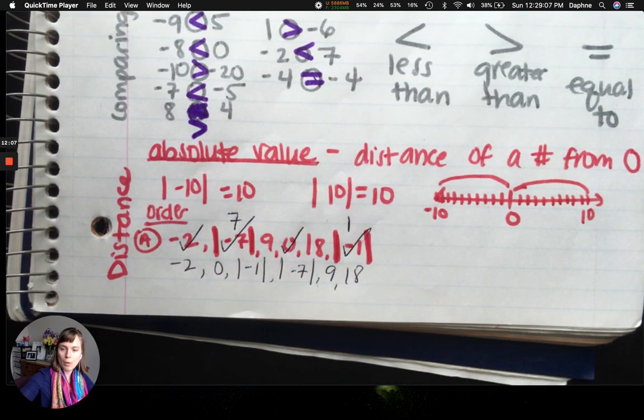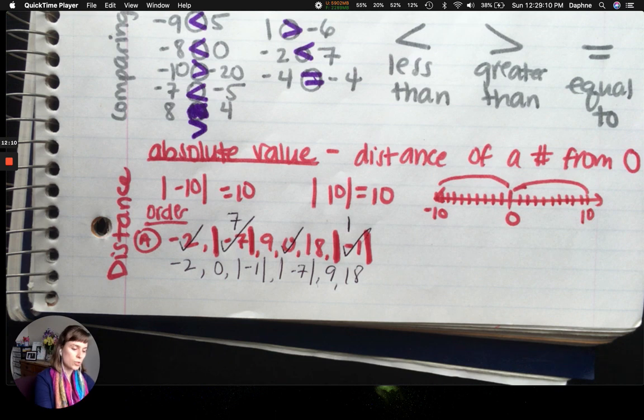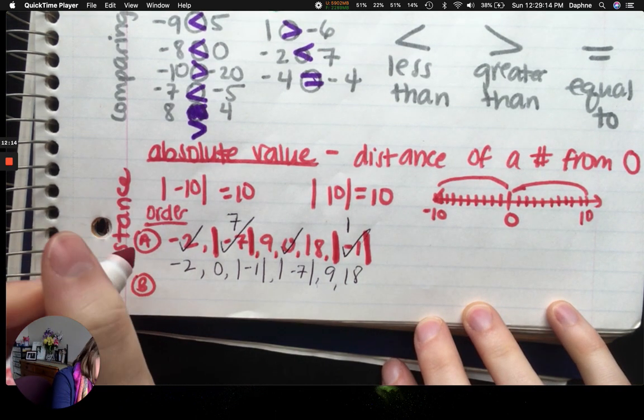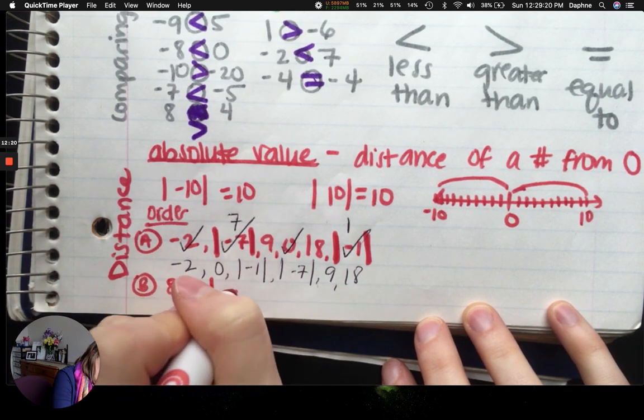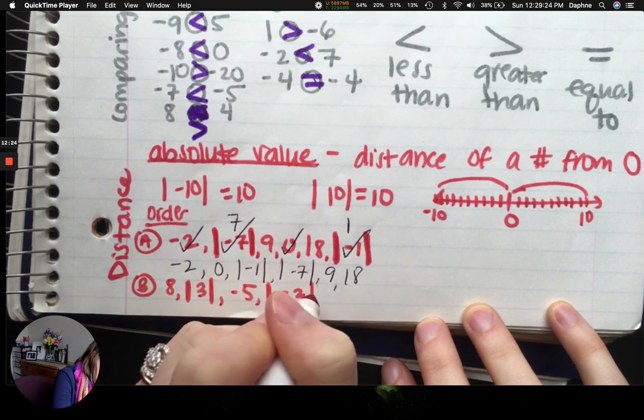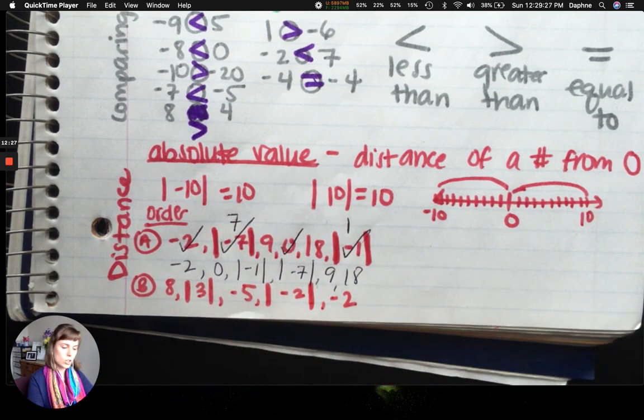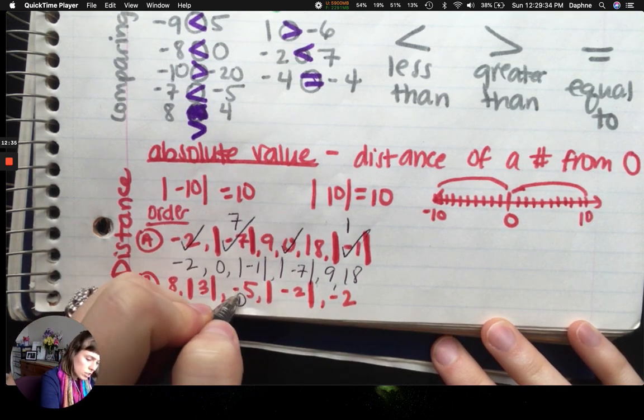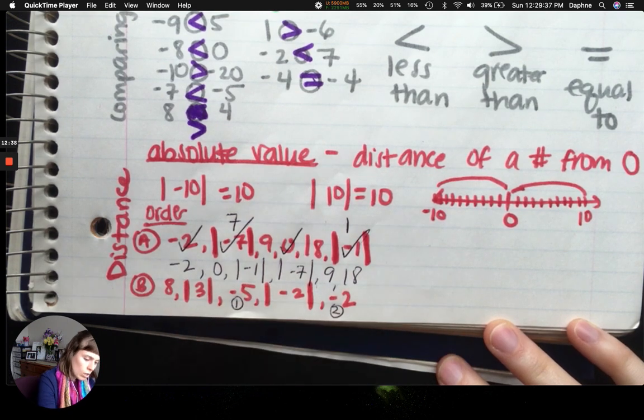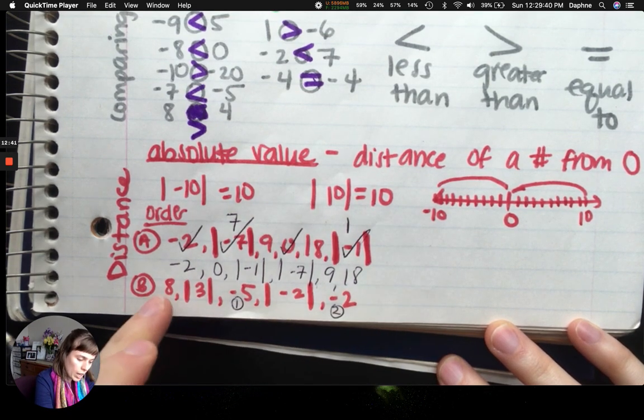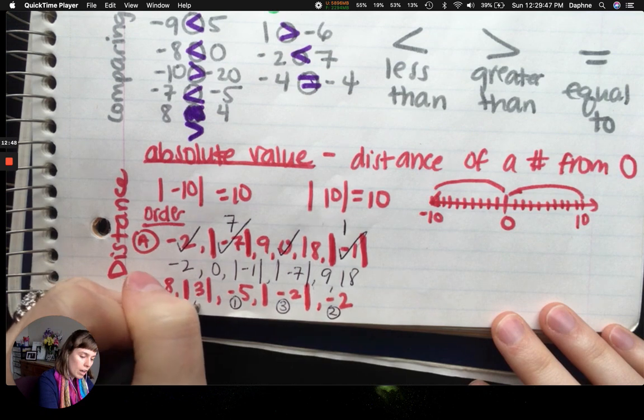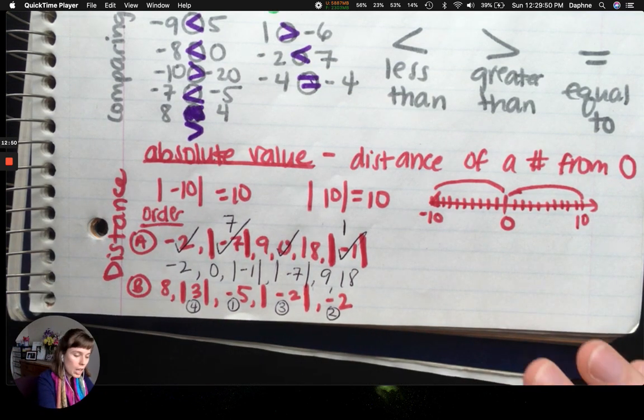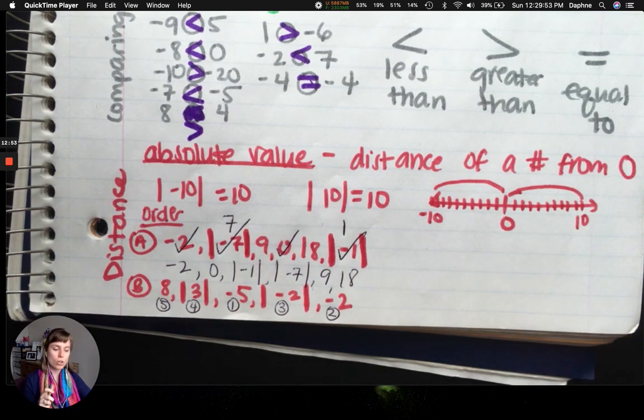I'm going to give you another example, but I want you to pause and do it on your own. Then I'll just write the answer. So for yours, I want you to order eight, the absolute value of three, negative five, absolute value of negative two, and negative two. So pause the video. When you ordered this, you should have negative five come first. Then you should have negative two. After that, this is two, three, and eight. So then this should come third, but you should have written it and kept it in the absolute value form. Then you should have absolute value of three. Don't forget the bars. And then eight should be your last one. So that would be the correct order of how you would write it.